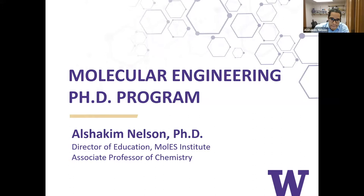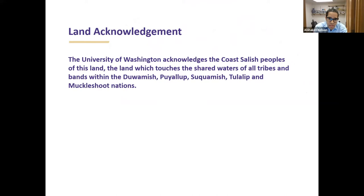First, I'd like to start with the land acknowledgment. The University of Washington acknowledges the Coast Salish peoples of this land, the land which touches the shared waters of all tribes and bands within the Duwamish, Puyallup, Suquamish, Tulalip, and Muckleshoot nations.